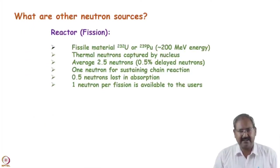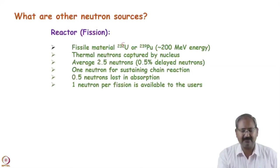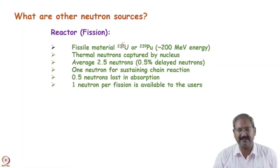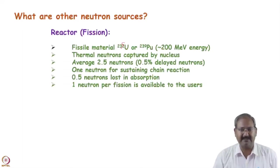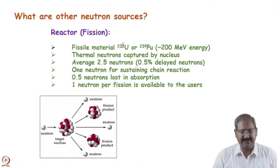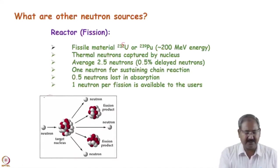A very large facility which can give a very large neutron flux is basically the fission reactor — a nuclear reactor — in which uranium-235 or plutonium-239 are used as the fuel. By capturing a neutron, these emit two or three neutrons as well as some fragments, and a nuclear reaction takes place.